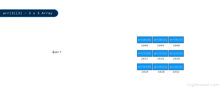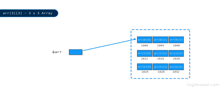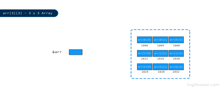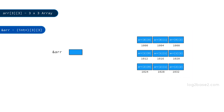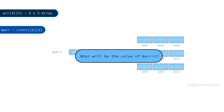The address of the array, i.e. &ARR, is a pointer to the whole 2D array. Since it is a 3x3 array, &ARR is a pointer to the whole 3x3 array. We can denote &ARR as a pointer of type int(*)[3][3], which simply means &ARR is a pointer to a 3x3 integer array. So the base address of the 2D array is 1000, meaning &ARR equals 1000.